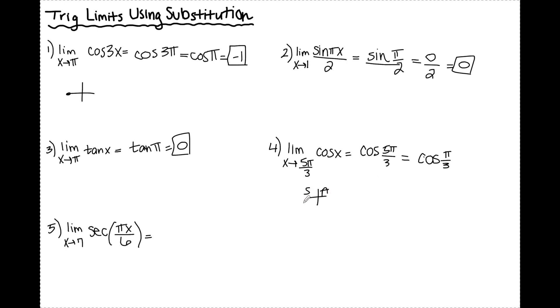I know that 5π/3 is going to be in the fourth quadrant. So cosine is positive. And the value of cosine π/3 is 1/2. So we have positive 1/2.